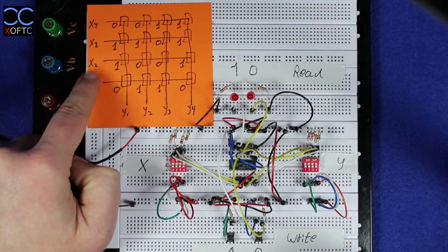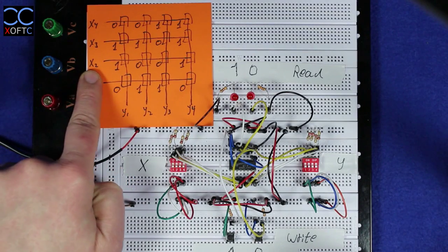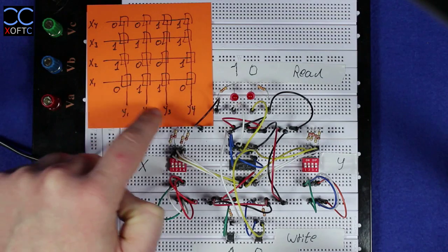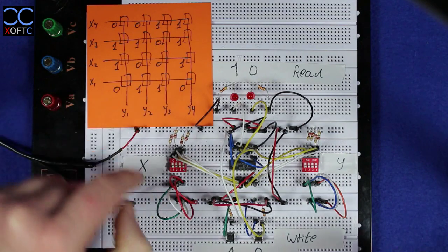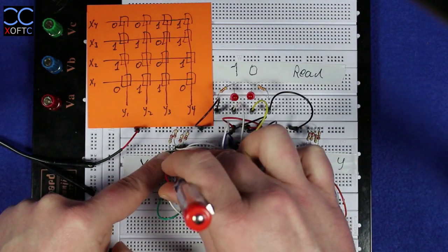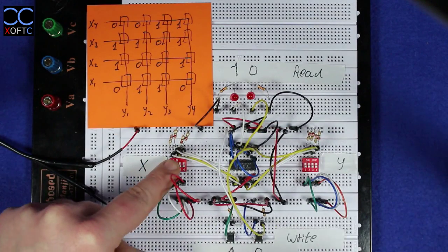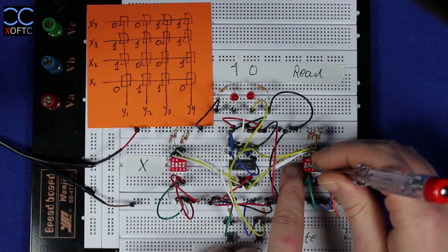And I'm going to read again the X2 line, starting with Y1, 2, 3, and 4, and let's see if it retained the value. So I'm first going to raise up X2 and let's see.